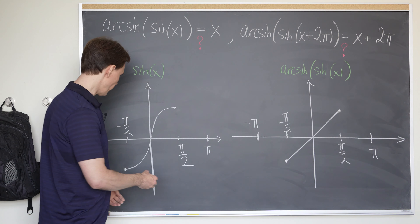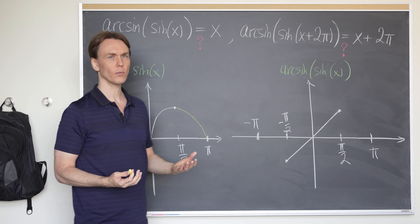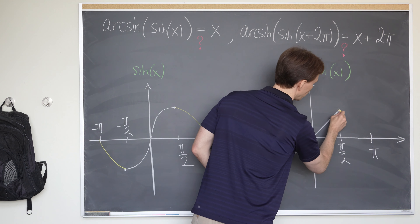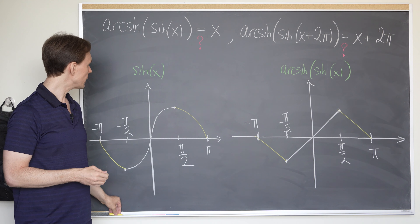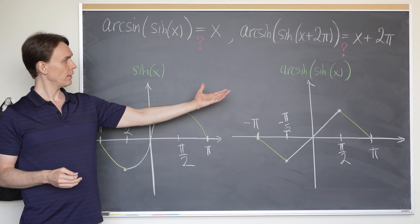However, on these other intervals, when sine of x is decreasing, you can check that when you plug it into the arcsine, this composition will also be decreasing like this. It will be linear, but decreasing in this way. And because sine of x is a periodic function, this will also be periodic, so the same pattern will be repeated with the period 2π.